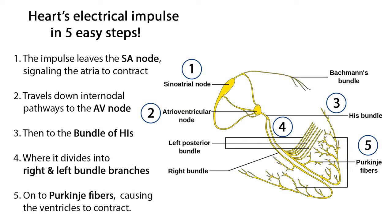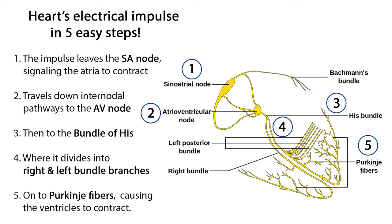Let's review the heart's electrical impulse in five easy steps. First, the impulse leaves the SA node, signaling the atria to contract, then travels down the internodal pathways to the AV node, then to the bundle of His where it divides into the right and left bundle branches and onto the Purkinje fibers, causing the ventricles to contract.